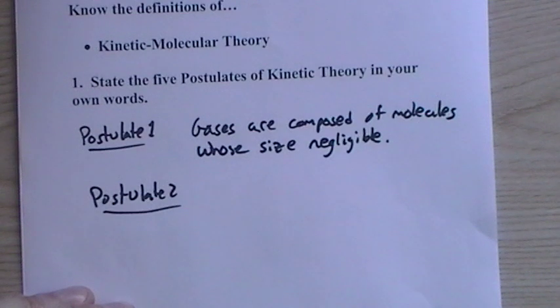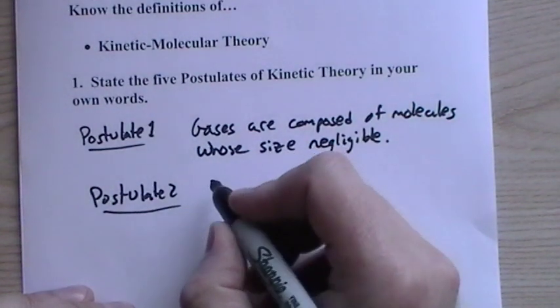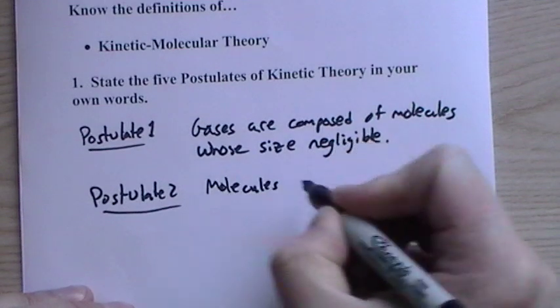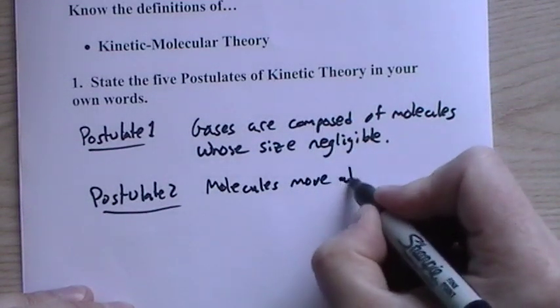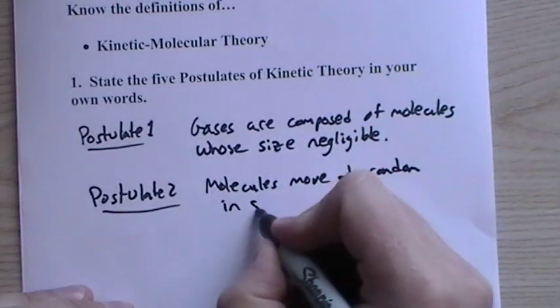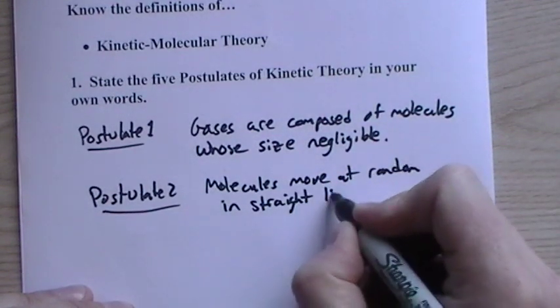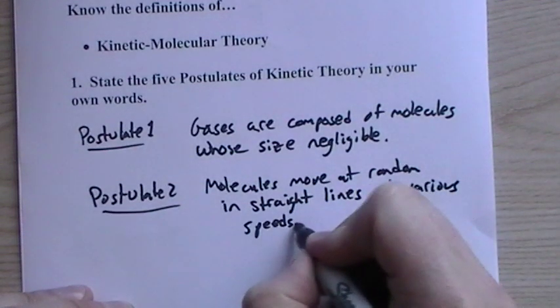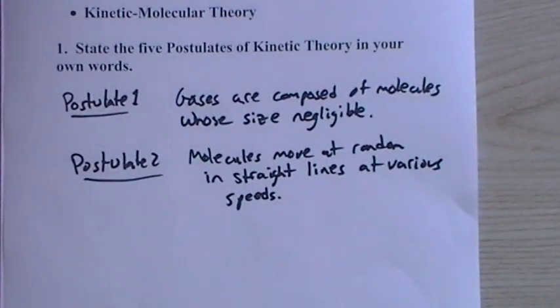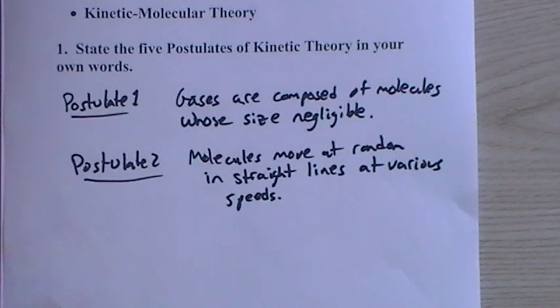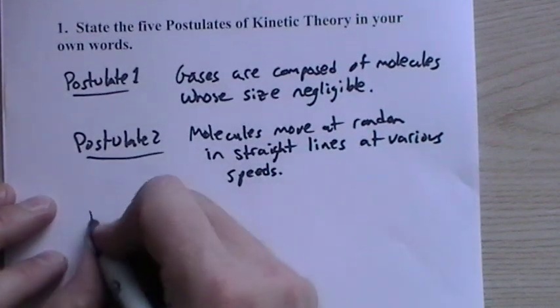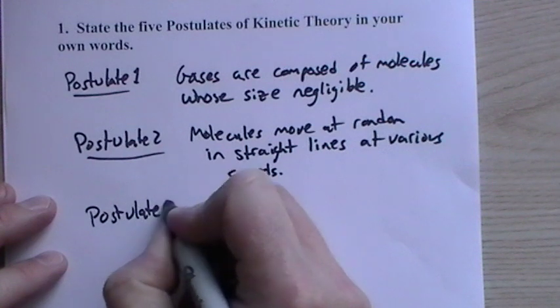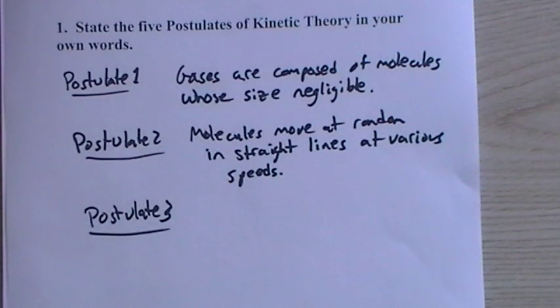Postulate 2: molecules move randomly in straight lines in all directions at various speeds. It's important to know that molecules don't curl and do all kinds of weird movements on their own. The only time they're going to change their direction is if they strike another molecule or the wall. But if they're on their own, and most of the time they are, they're traveling in straight lines, but there's a variety of speeds.